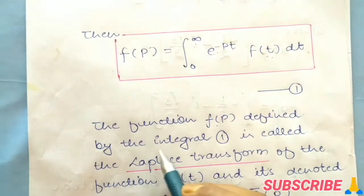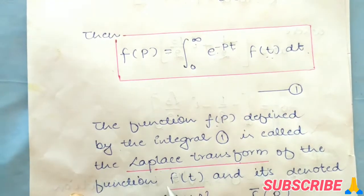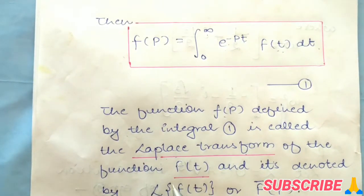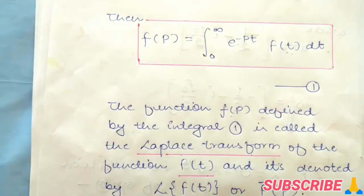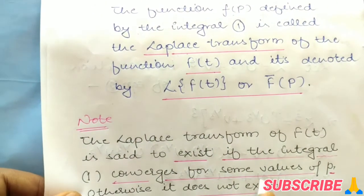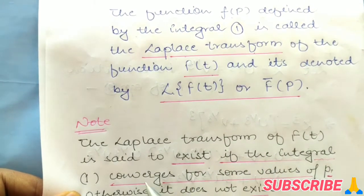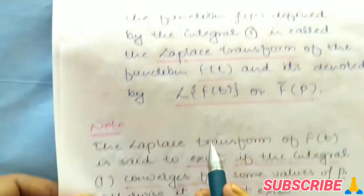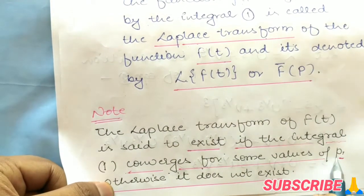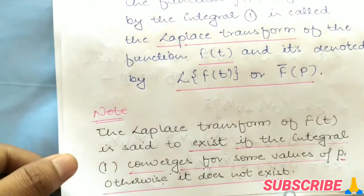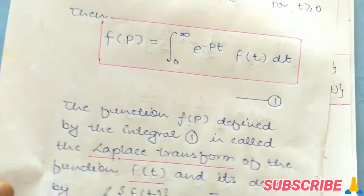The function F(p) defined by the integral is called the Laplace transform of the function f(t), and it is denoted by L{f(t)} or f̄(p). It is said to exist if the integral converges for some value of p. Otherwise, it does not exist.